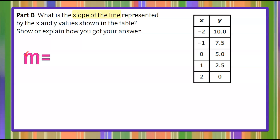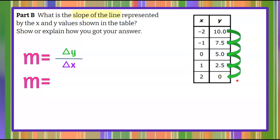The first way is to understand that m, the variable m, represents the slope of a line. We're going to find it by finding the change in y and dividing by the change in x. When we look at our table of values, we're looking at what is the change in y between all of these points. Going from 2.5 to 0 is down 2.5; from 5 to 2.5, again down 2.5; 7.5 to 5, down 2.5; 10 to 7.5, down 2.5. So it's a constant decrease of 2.5 — we write negative 2.5.